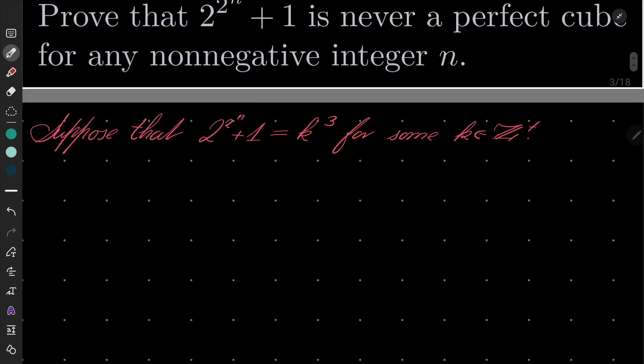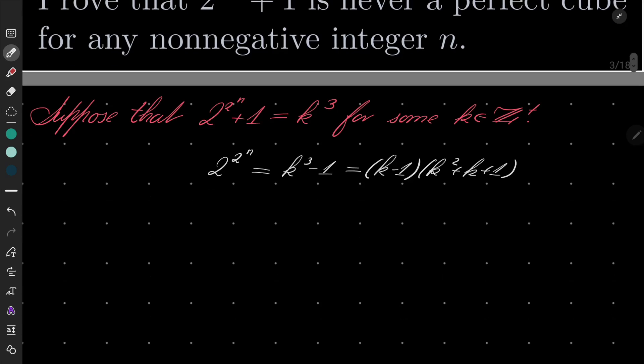Well that means that 2 to the power 2 to the power of n equals k cubed minus 1, but k cubed minus 1 with the well-known factorization is k minus 1 times k squared plus k plus 1.